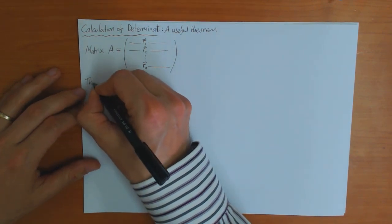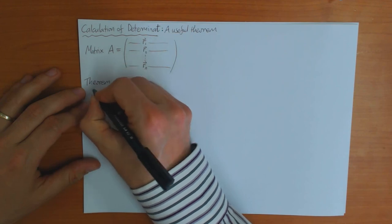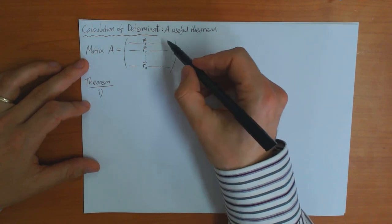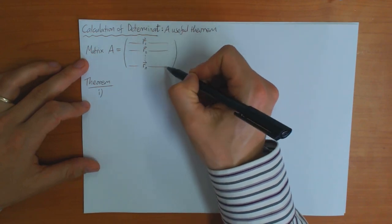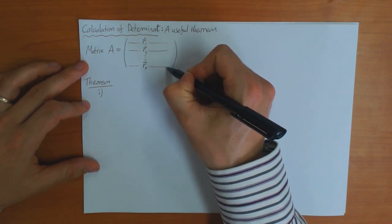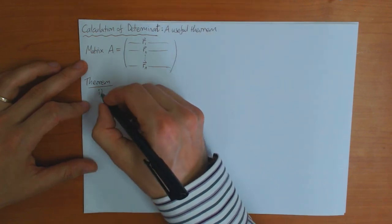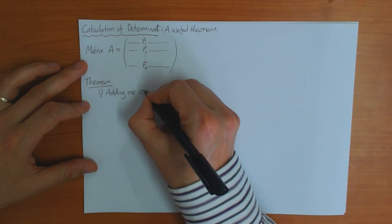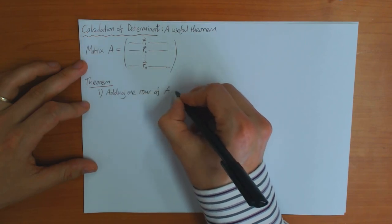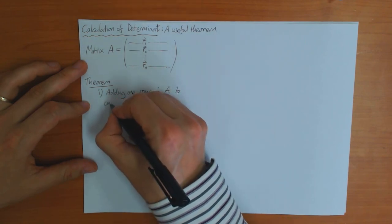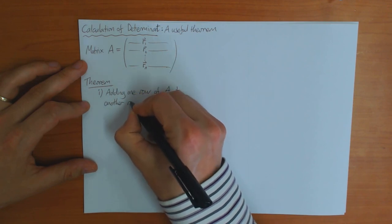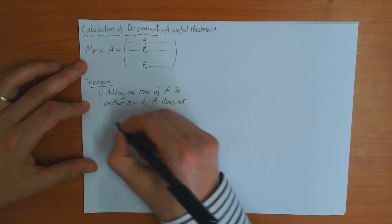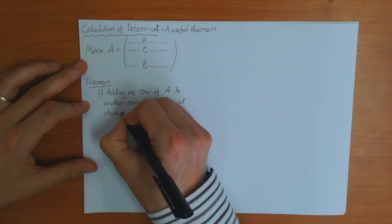The theorem says two things. First of all, if you add one row of A to a different row of A, then that does not change the determinant. So adding one row of A to another row of A does not change the determinant.